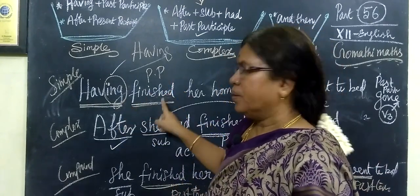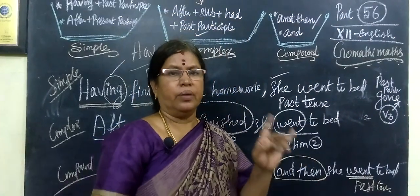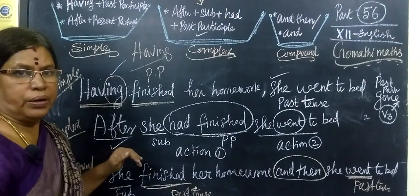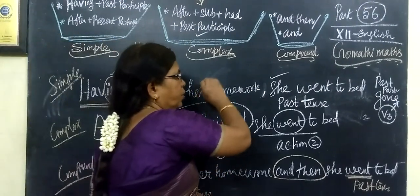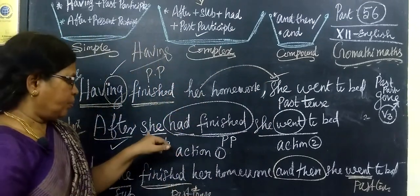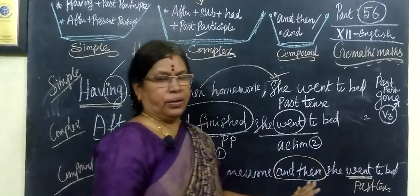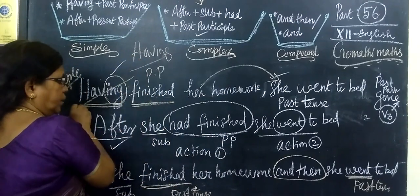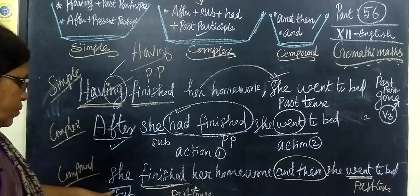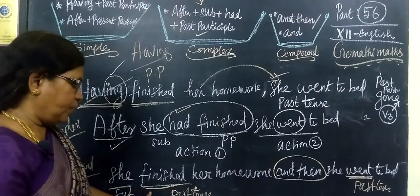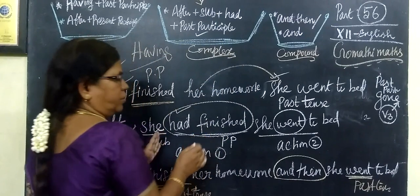So in a simple sentence there is 'having' and then past participle. For complex sentence, after the structure: after, subject, had, past participle. For compound sentence, she finished her homework and then she went to bed. This covers all three sentence types — simple, complex, and compound — with one example.